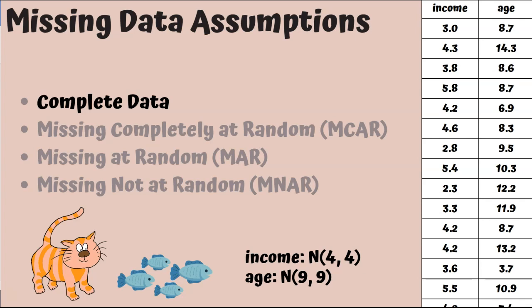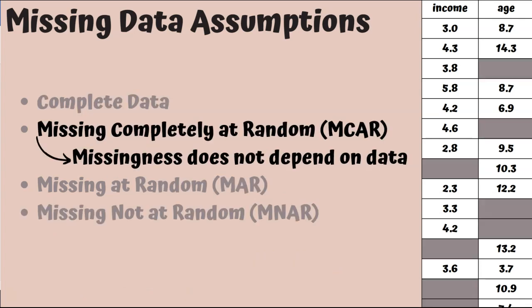First, I'll illustrate what it would look like for a data set to be missing completely at random. I've just randomly selected a number of incomes and a number of ages to be missing, and there's no pattern behind it at all.